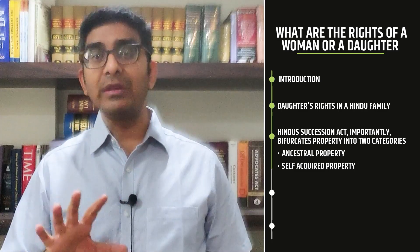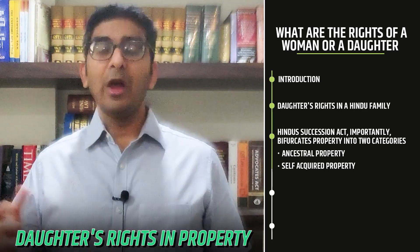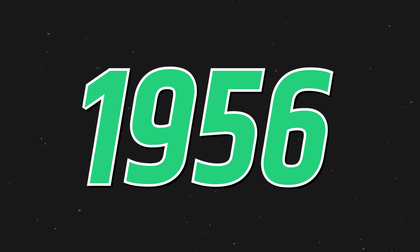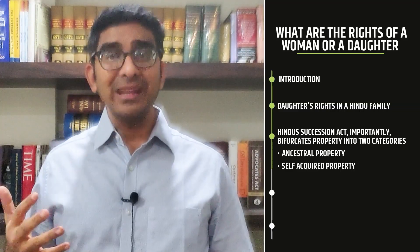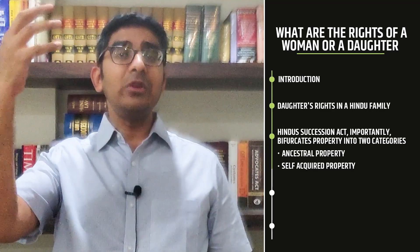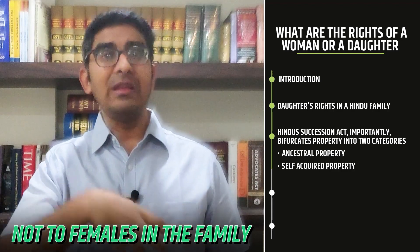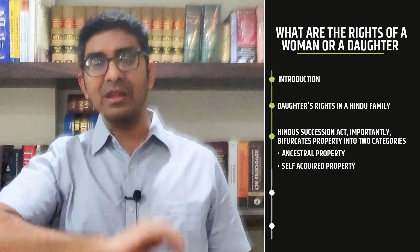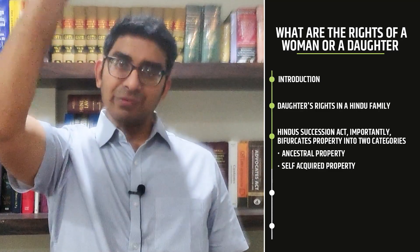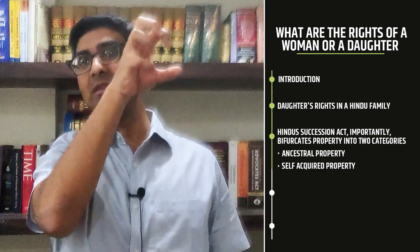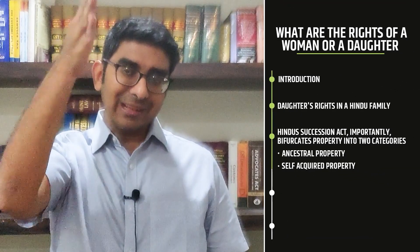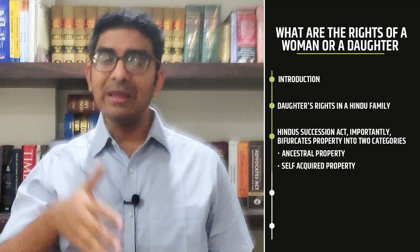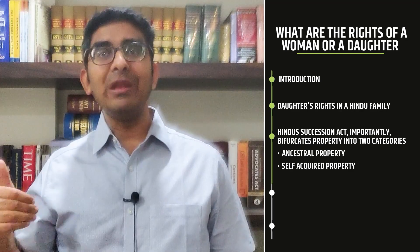That is one important thing to keep in mind before we discuss daughter's rights in property. When the Hindu Succession Act was brought into force in 1956, under Section 6 of that act, the legislature only permitted property to go to the males in the family, not to females. So in a family with a father, son and daughter, the ancestral property would only go to the son — not to the daughter. Property only came to the male lineage; it only came to the male members of the family. The property never devolved upon the women of the family at all.